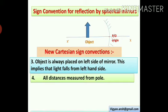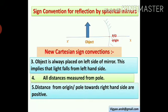What do we say here? The distance from the origin, or the pole, towards the right-hand side. How do we take it? Always take it positive. But what do we take on the left side? Negative. Here is our object on the left side, so what is this? Negative.